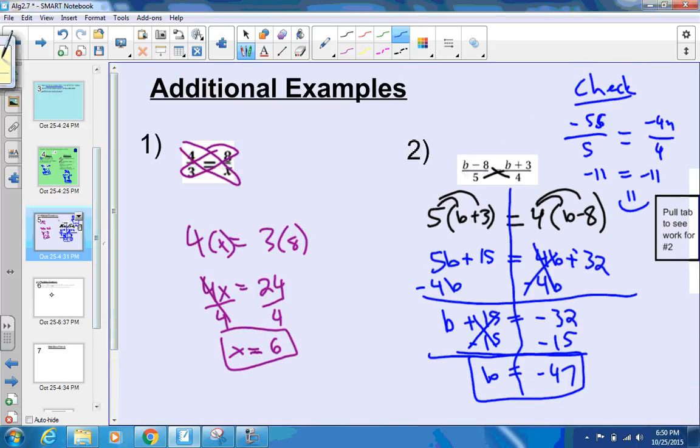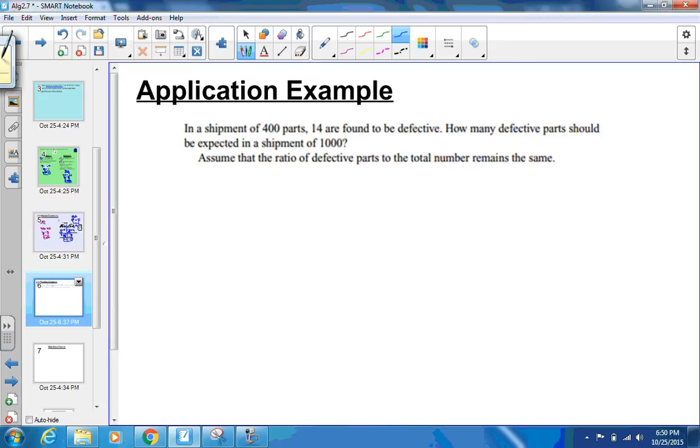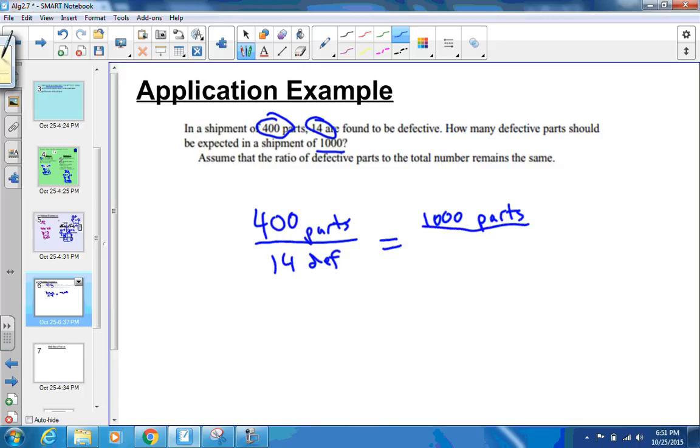I have one more example I want to go through. This one is a word problem. A very common type of word problem that you can use proportions for. In proportions, you want to look for things that would be equal and have the same types of things on both the top and the bottom of the ratio. This says, in a shipment of 400 parts, 14 are defective. How many defective parts should be expected in a shipment of 1,000? So I'm going to write it out. We're going to do 400 parts over 14 defective. That's our ratio.